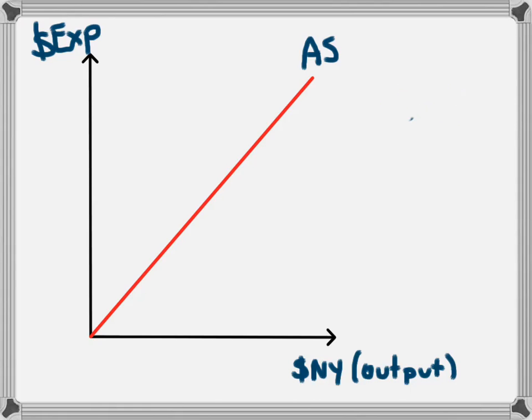An aggregate supply curve. And we don't need to always show this, but just for this one, we'll mention that this supply curve, because of that one-to-one relationship, is going to be 45 degrees. That's how the aggregate supply curve will always look.